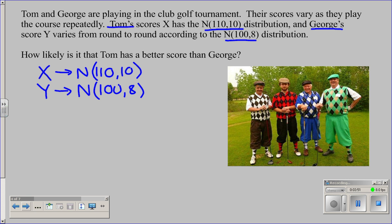What we're interested in here is how likely is it that Tom has a better score than George? Keep in mind that this is golf, and in golf we want a lower score. A lower score is a better score. Tom is X and George is Y. So basically we want to know what is the probability that Tom, X, has a lower score than George, Y. Put another way, that means we want to know what's the probability that X minus Y is less than zero.